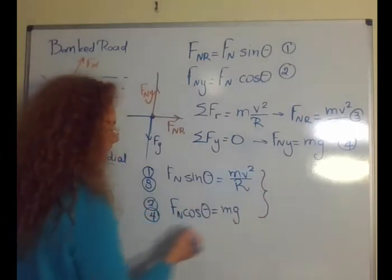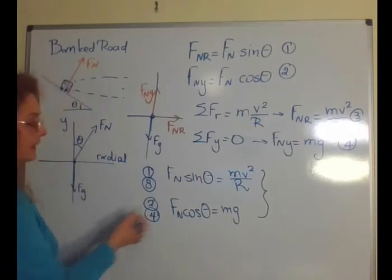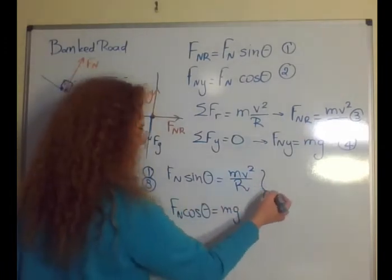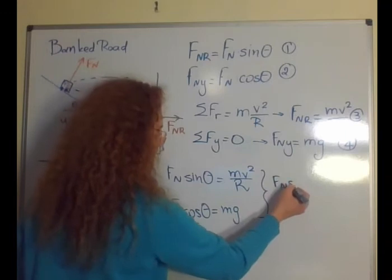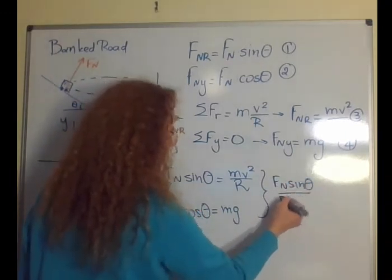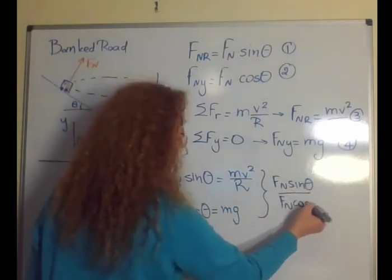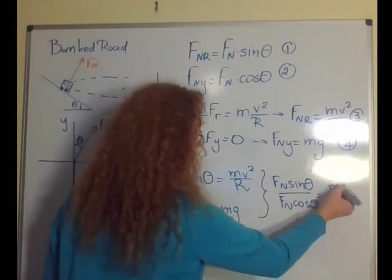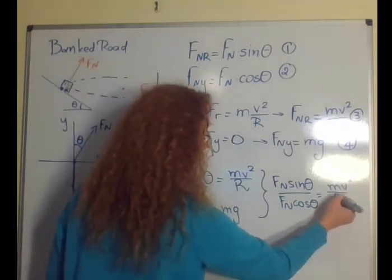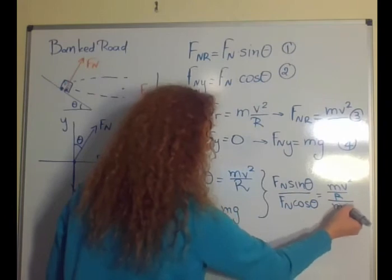By dividing these two, I can find again that fN sine theta over fN cosine theta equals mv squared over r divided by mg.